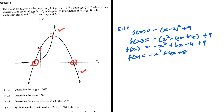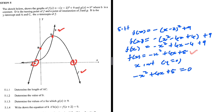So we have f of x. Now we can go ahead and determine the x-coordinates of a and c. We know that these are x-intercepts, so y equals 0. We're going to have minus x squared plus 4x plus 5 equals 0. If we divide both sides by minus 1, we get x squared minus 4x minus 5 equals 0.